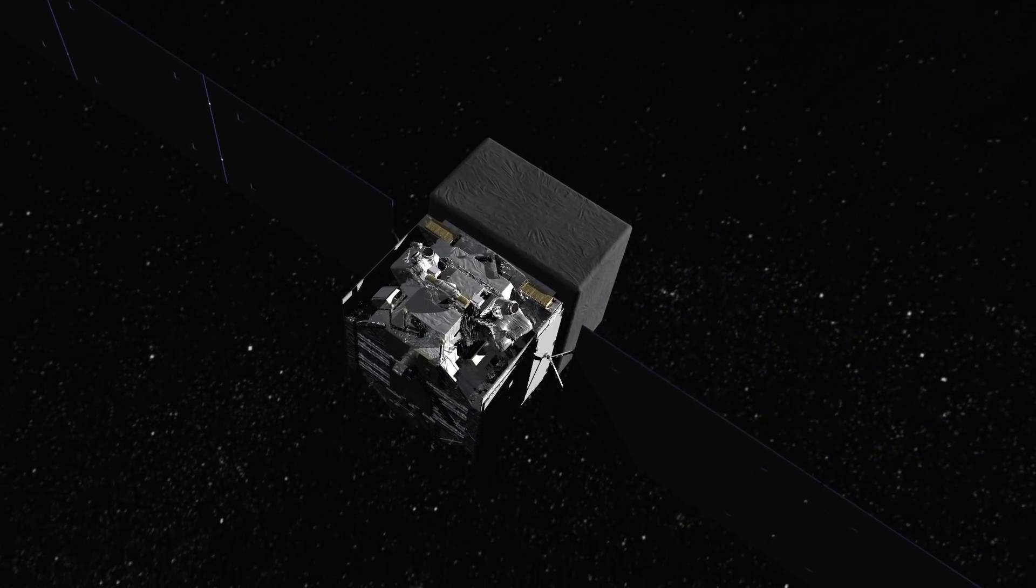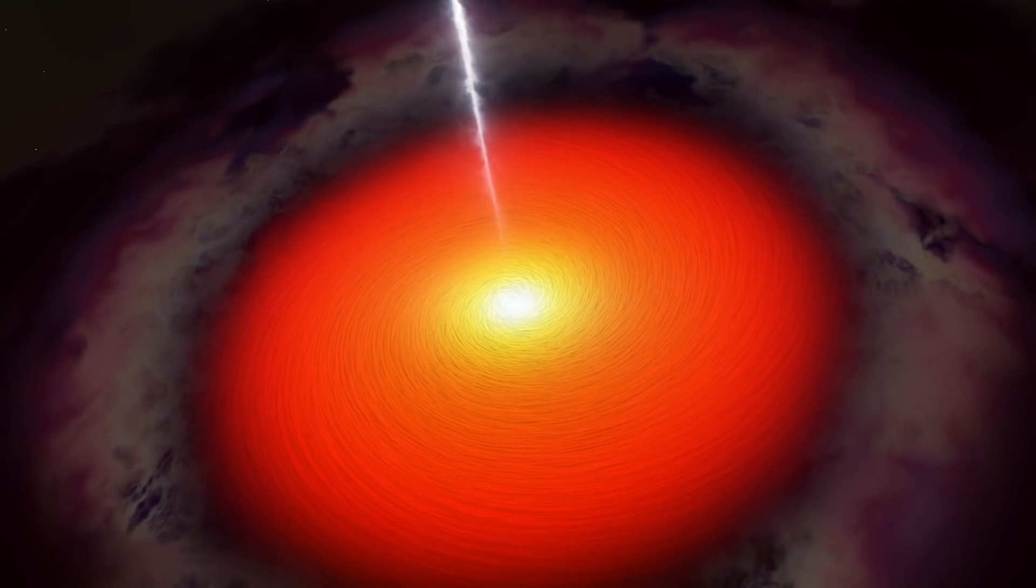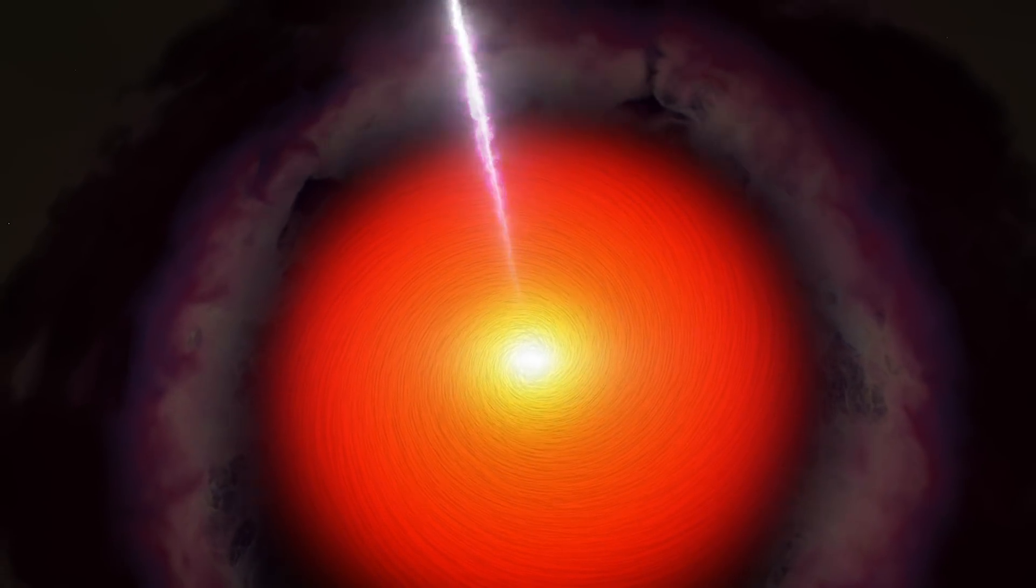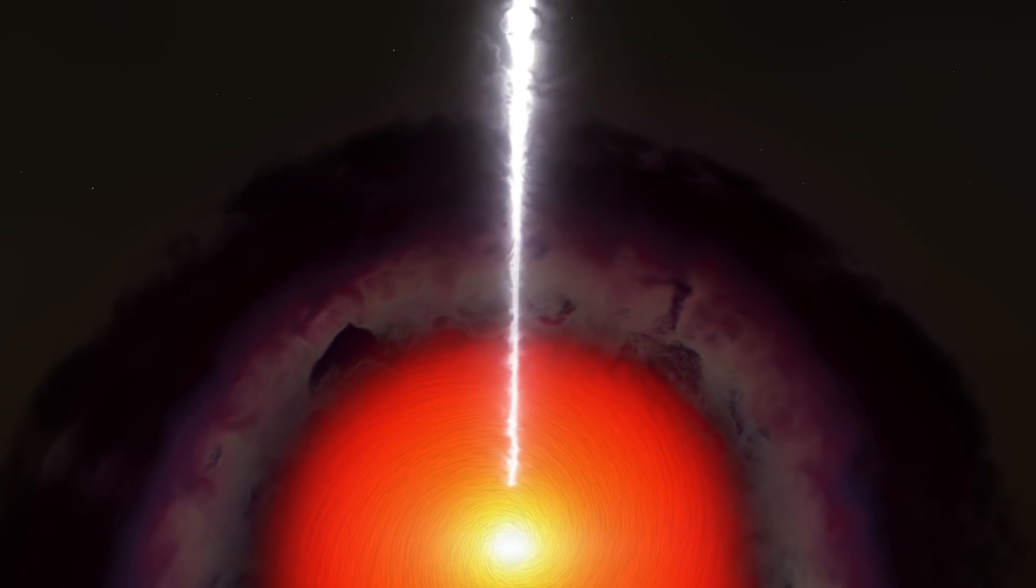Over the last 10 years, Fermi has measured gamma rays from nearly 2,000 blazars. These galaxies host supermassive black holes and produce jets of high-speed particles.